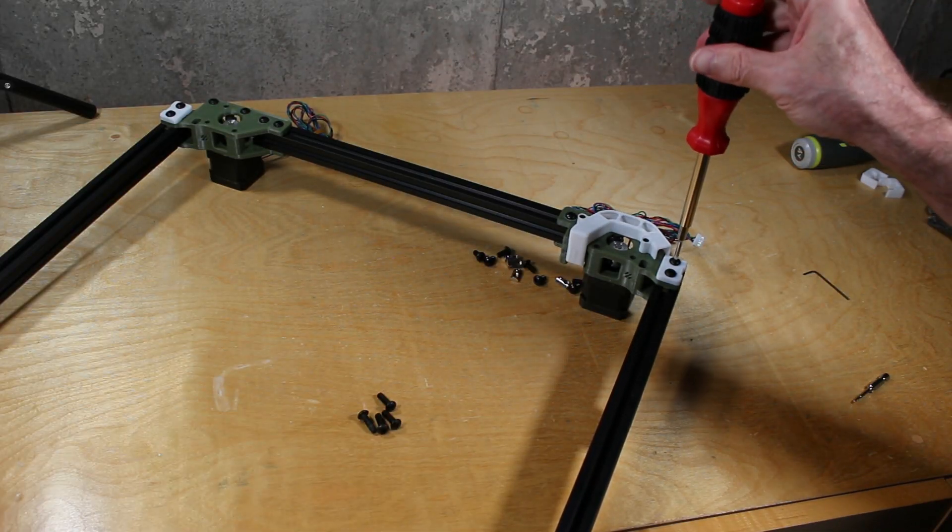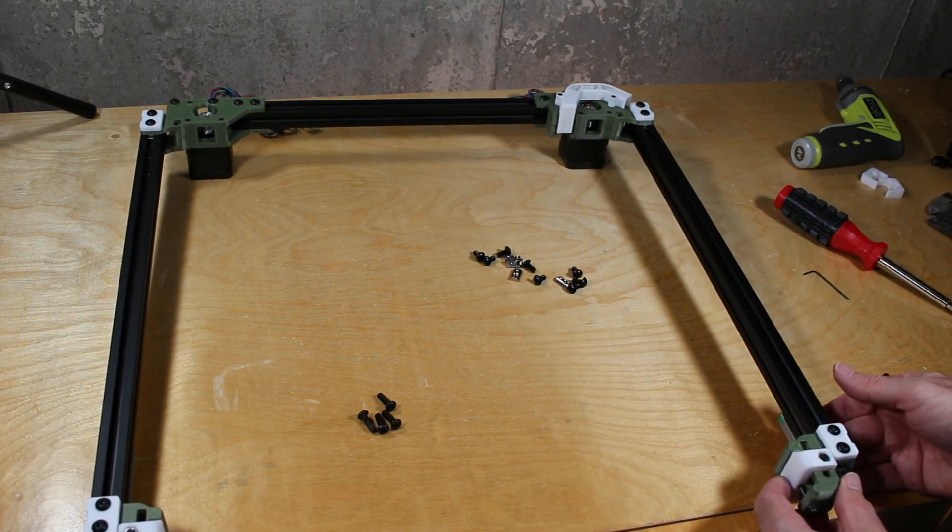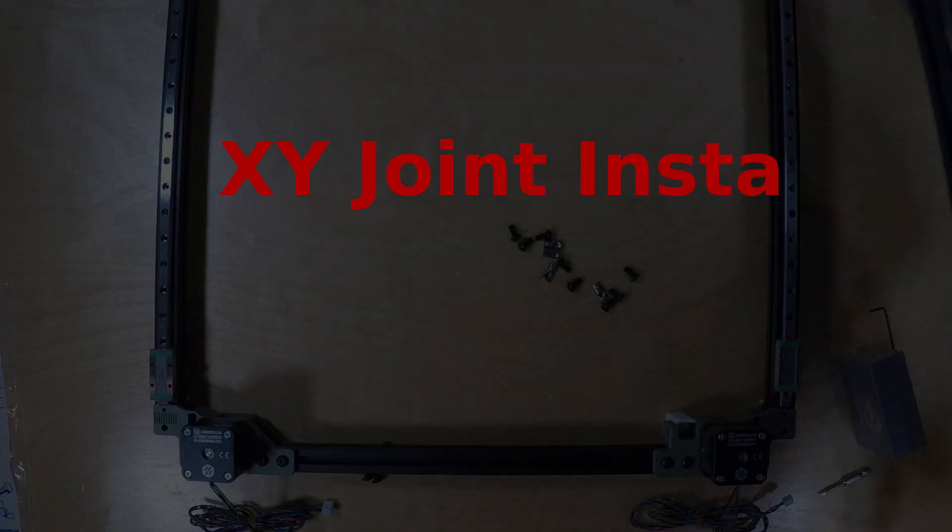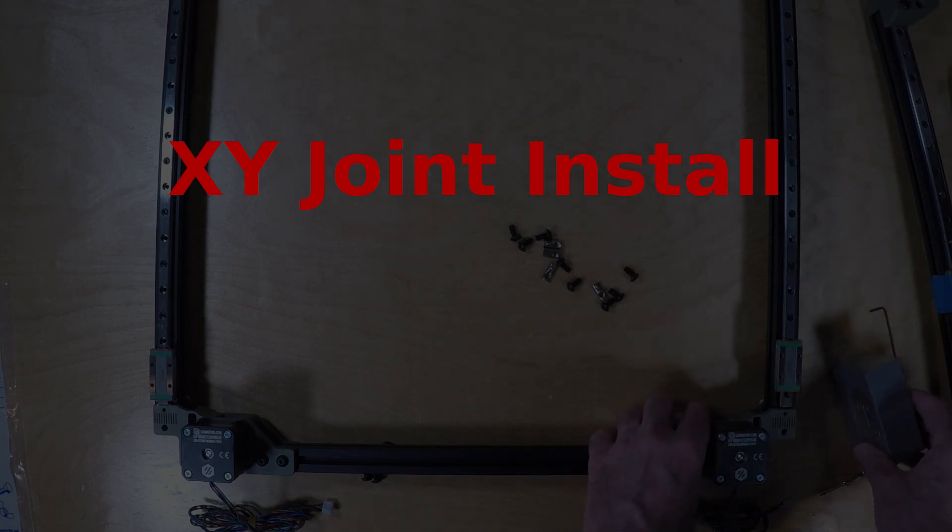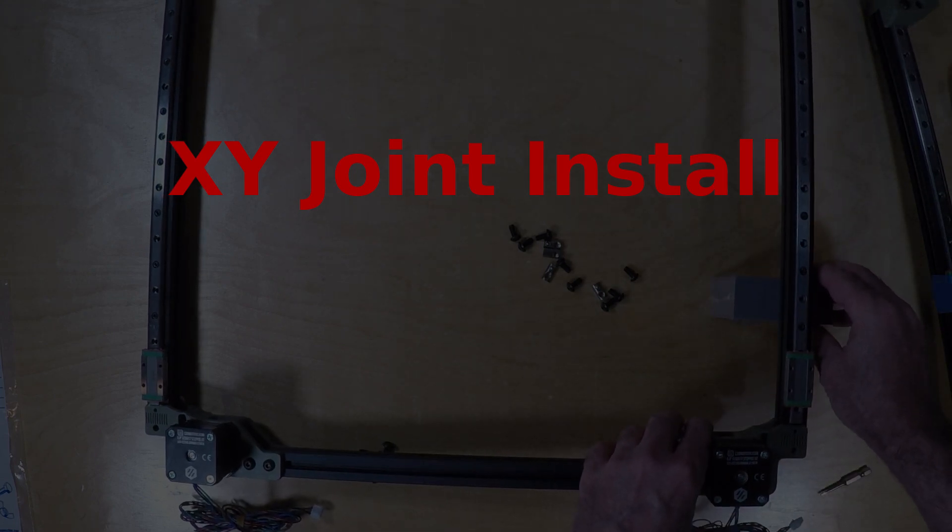And make sure you add the fasteners for the belts. And that's it. Now we need to go ahead and install the XY joints onto the linear rails.